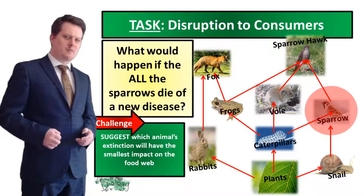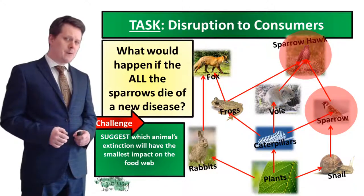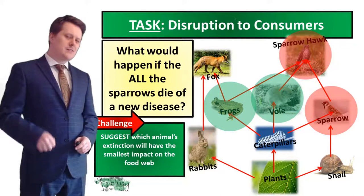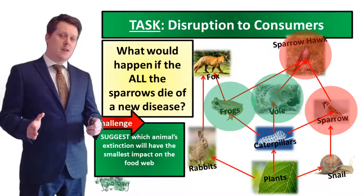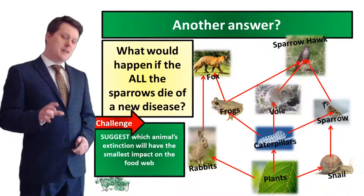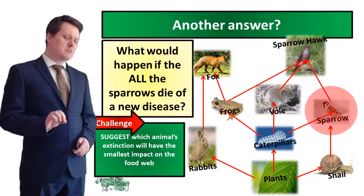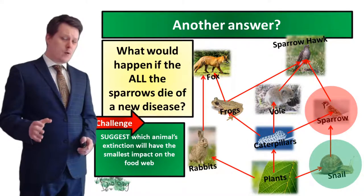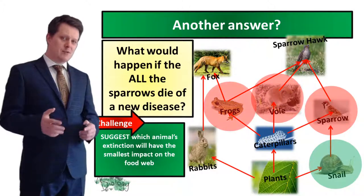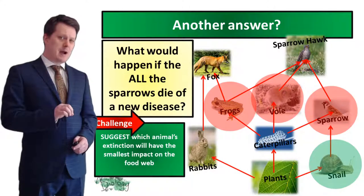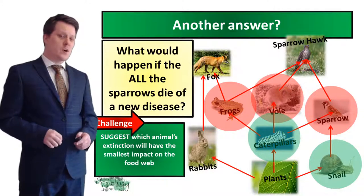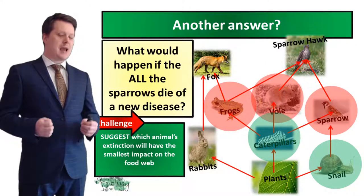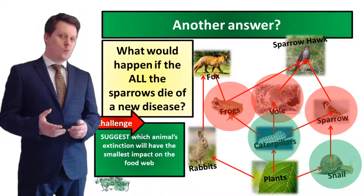If our sparrows became extinct, sparrowhawk numbers might also go down because they've got less food to eat. Because there are fewer sparrowhawks, the number of frogs and voles may increase. And let's not forget that sparrows also eat snails, so fewer sparrows means more snails. There are multiple answers — in another scenario, sparrows become extinct, snail numbers go up, but sparrowhawks eat more voles and frogs to maintain their numbers. With no sparrows, fewer voles and frogs, we could end up with more caterpillars, and ultimately fewer plants, fewer rabbits and fewer foxes. In reality, if you take something out of the food web, eventually the populations of all the other organisms will become stable.